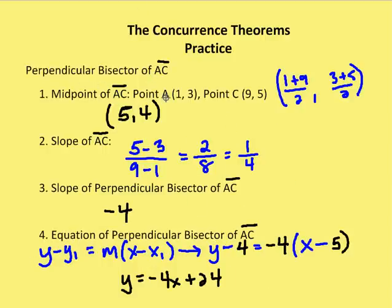Perpendicular bisector of AC — midpoint of AC. Using the midpoint formula, (x1 + x2)/2, (y1 + y2)/2, gives us a midpoint of (5, 4). So 1 + 9 = 10 over 2 is 5; 3 + 5 = 8 divided by 2 is 4. Now the slope of AC is the change in y values: (5 - 3) over (9 - 1) gives us a slope of 1/4 for AC. The slope of the perpendicular bisector is the opposite reciprocal, which is -4.